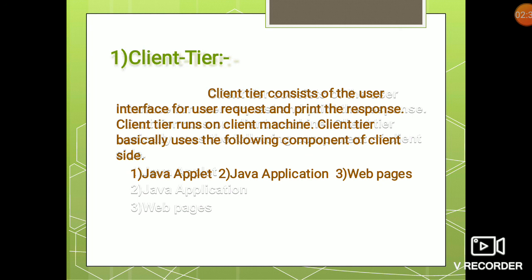The client tier consists of the user interface for user requests and prints the response. The client tier runs on the client machine and basically uses the following components: Java applets, Java applications, and Java web pages. Ultimately, the client tier has the logic of how the entire application can be interacted with by the user — how the user will communicate with your system is the work of the client tier.